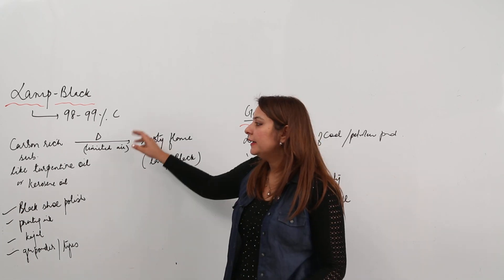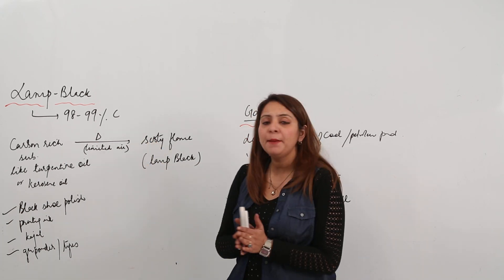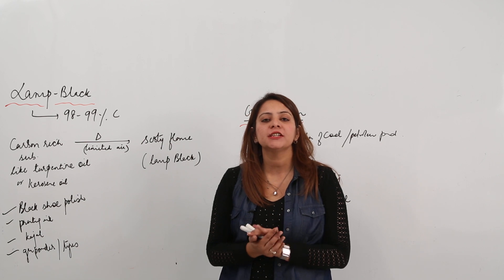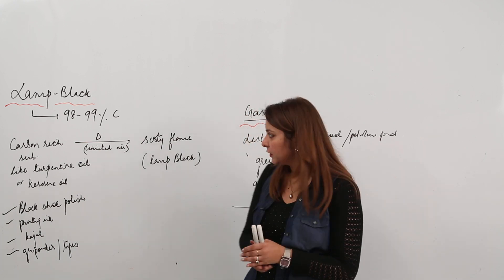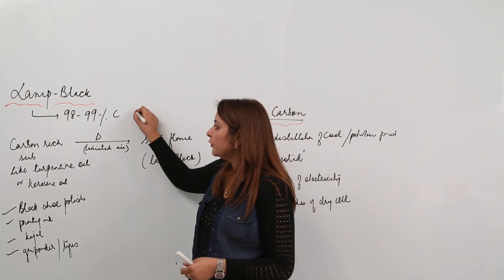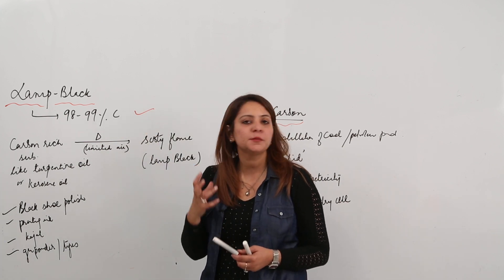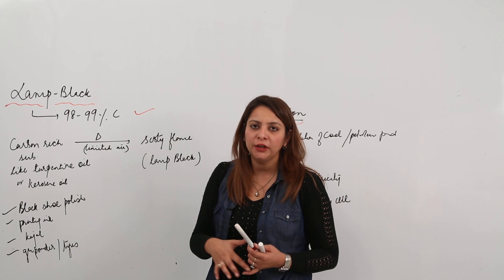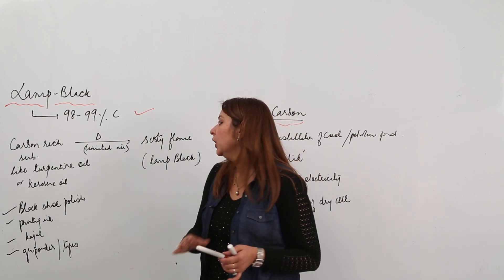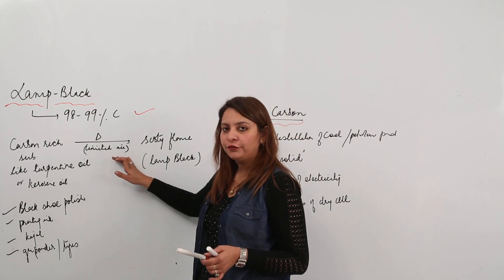The other form is lamp black. Lamp black is the purest form of carbon because it contains 98 to 99 percent of carbon. It is obtained whenever you heat any carbon-rich substance like kerosene oil or petroleum oil, which is rich in carbon, in a limited supply of air.